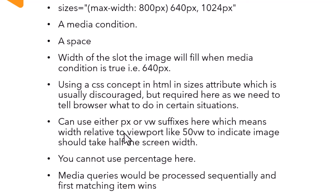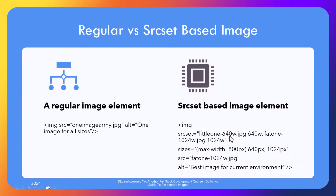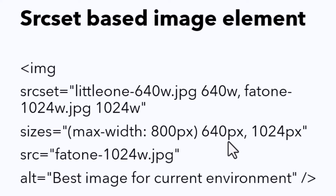Let's go back to our example. Now that the pieces are in place and the browser encounters the image attribute with source set and sizes, it would test the media queries one by one until it finds one matching the current screen environment. Then it would take the slot size value against that media query. The picked slot size would be compared with all the entries in source set one by one until a match is found, and the image would be downloaded and displayed. If no exact match is found, the browser picks the first image that is bigger than the chosen slot size.